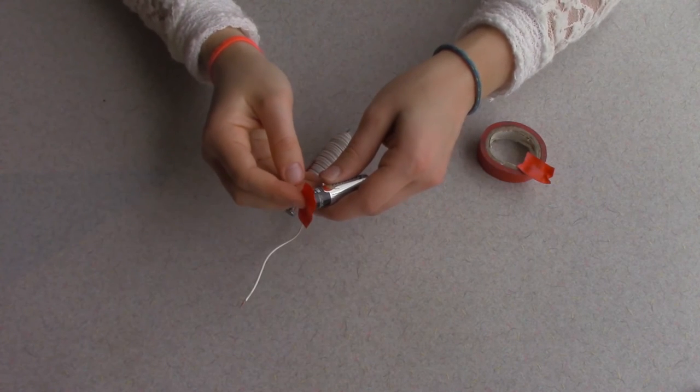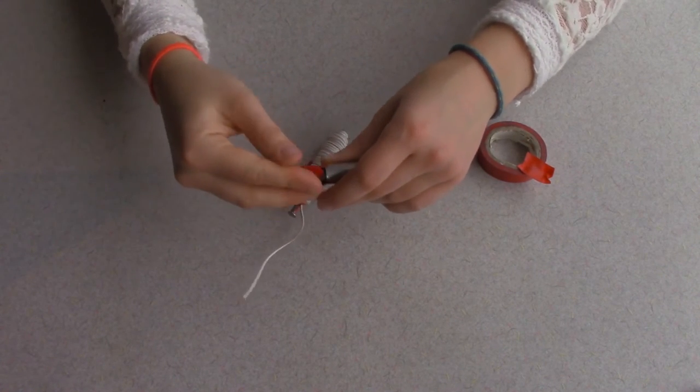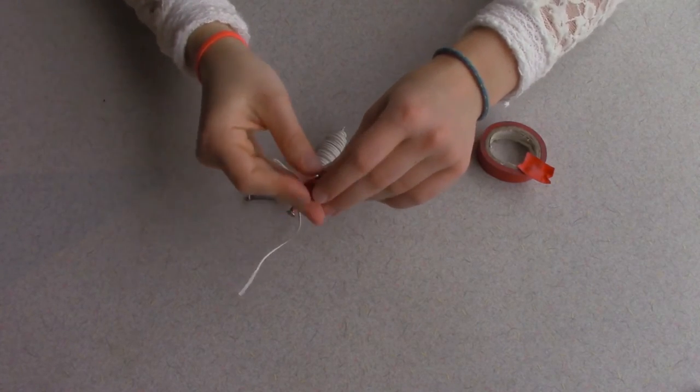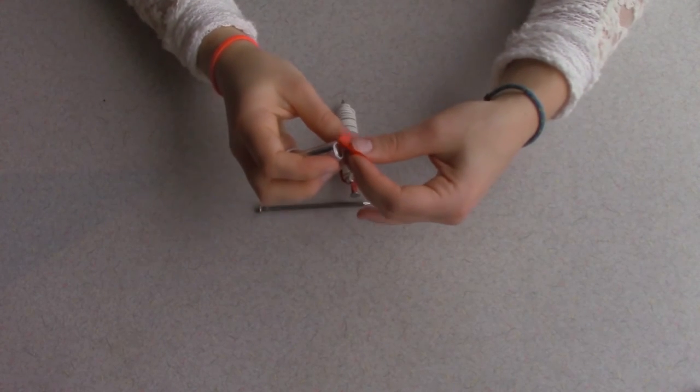Now you're ready to attach your electromagnet to the battery. Connect one end of the wire to the positive terminal of the battery, taping it in place. Then carefully connect the other end of your wire to the other end of the battery. If the wire or battery start to get extremely hot, disconnect them immediately.